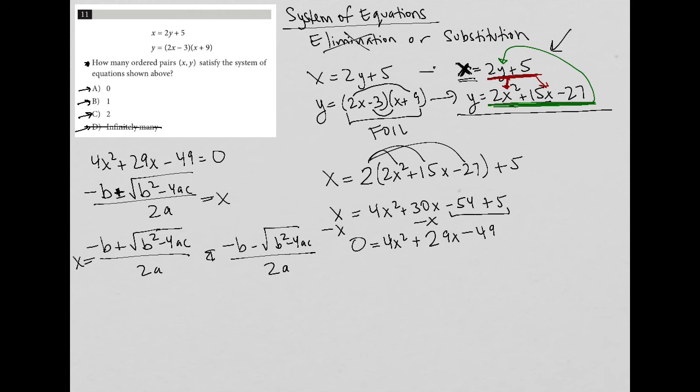And because each of these represents an x value, that means when I solve this, I'm going to get two separate x values. I'm going to get an x from here, let's call it x₁. I'm going to get an x from here, let's call it x₂.